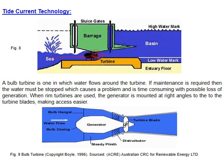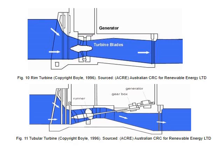One challenge is that the turbine and generator are underwater, making maintenance difficult. One solution is to place the generator outside using a rim turbine design, keeping only the turbine submerged while the generator remains accessible.